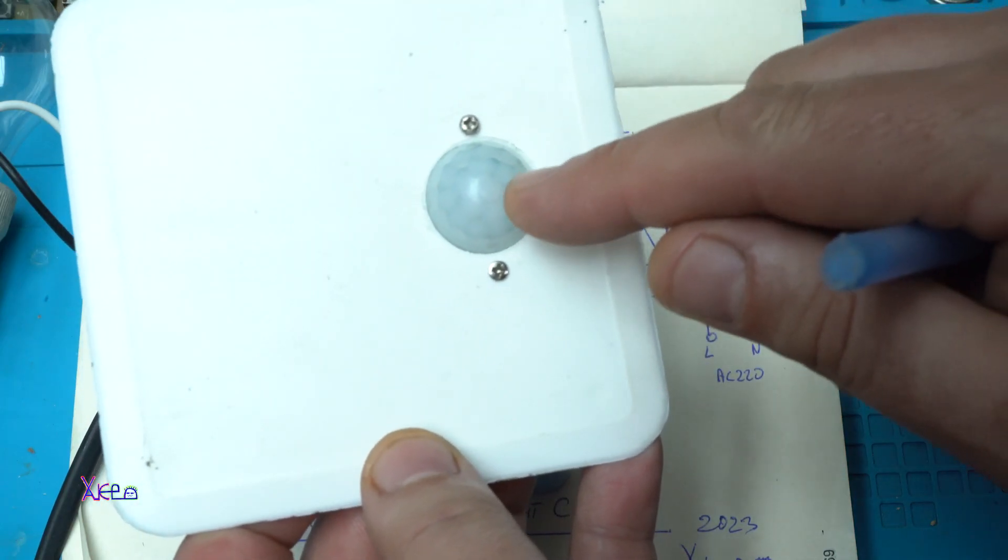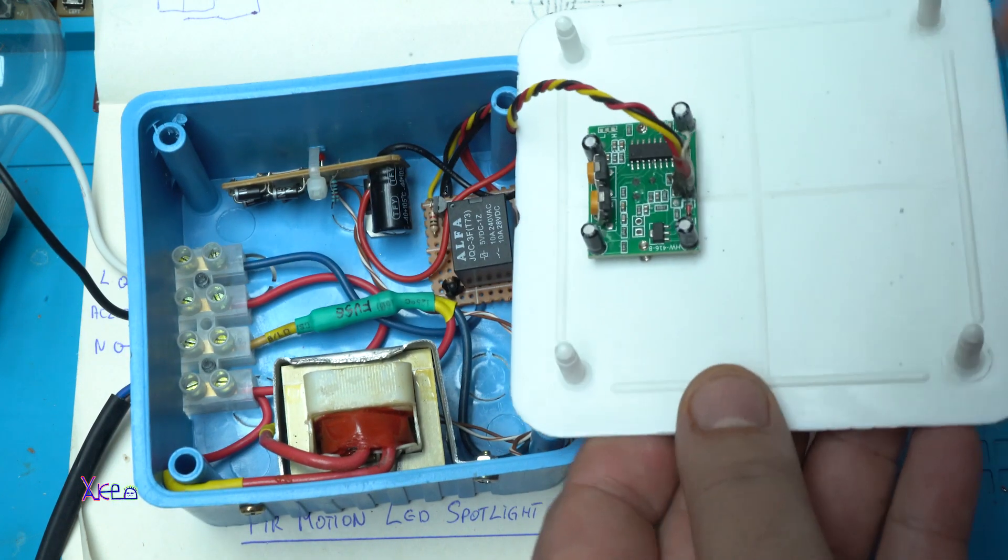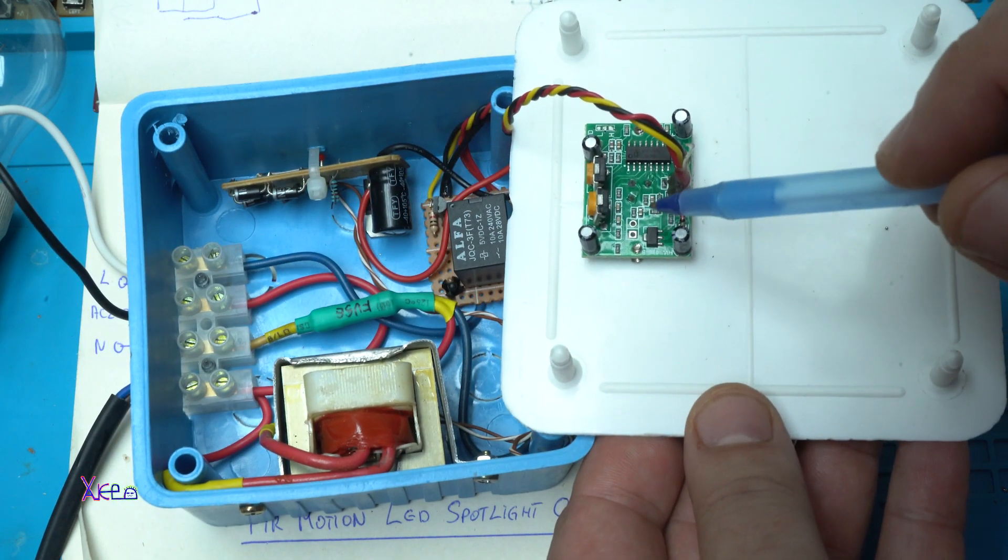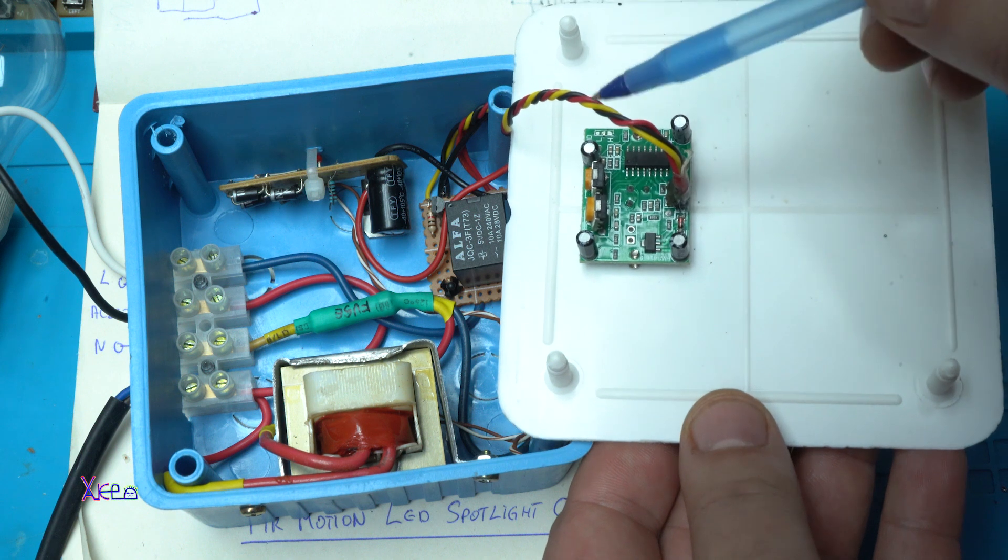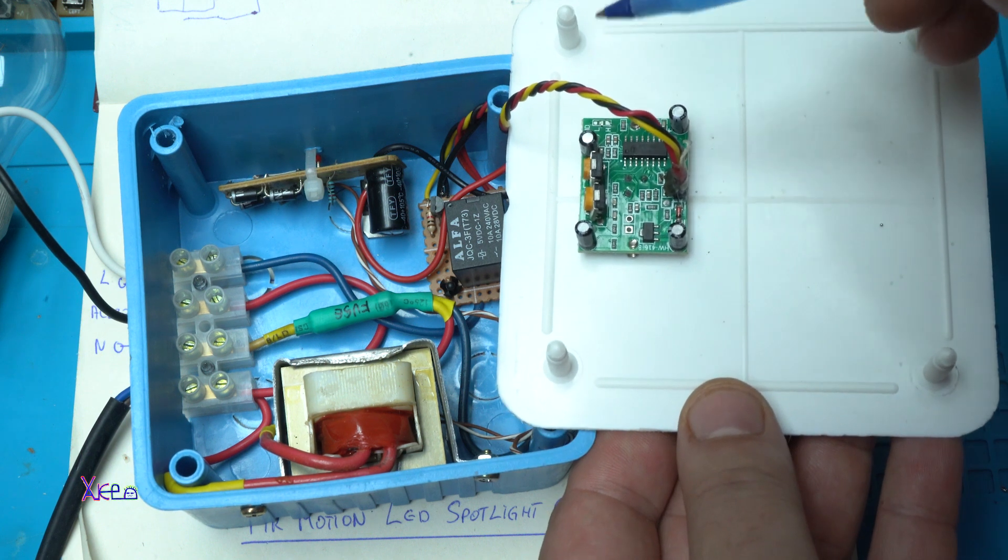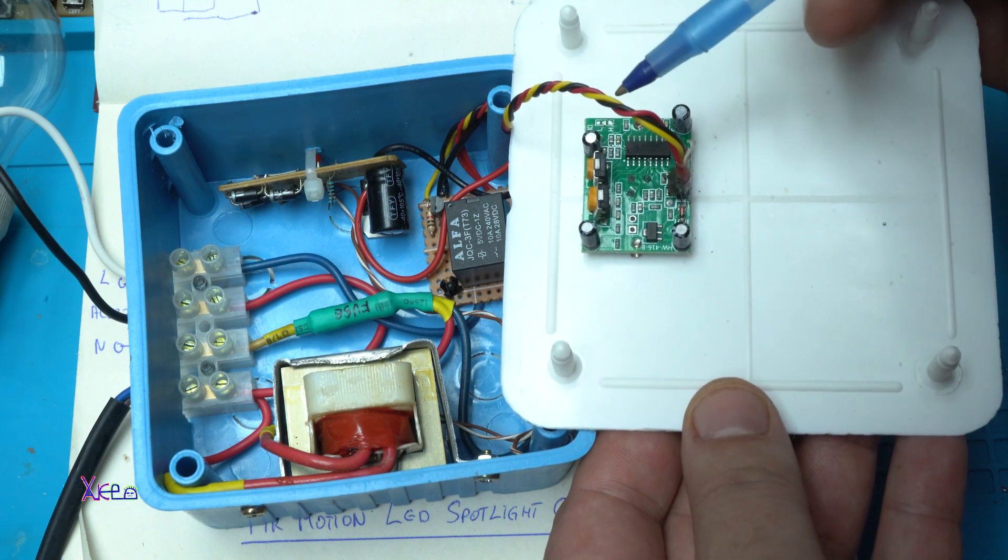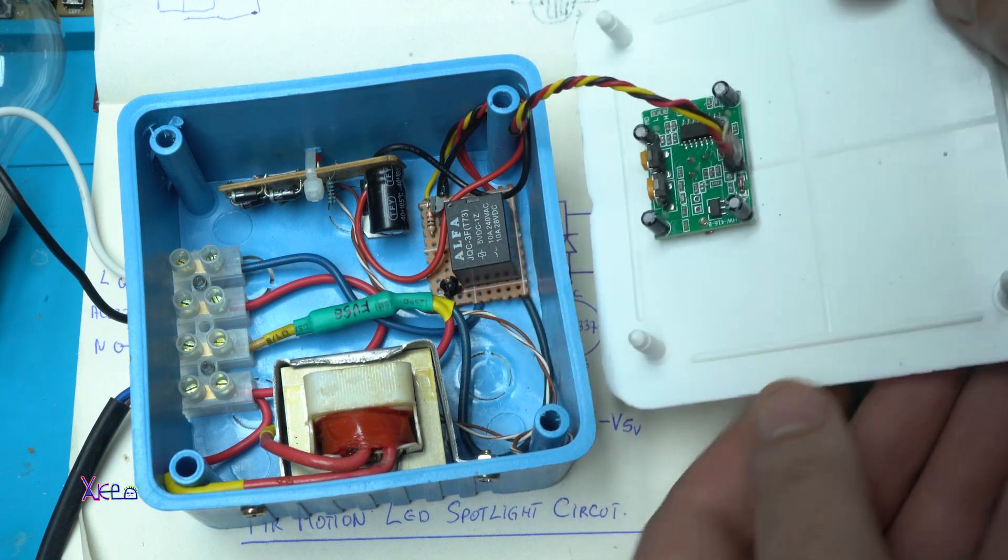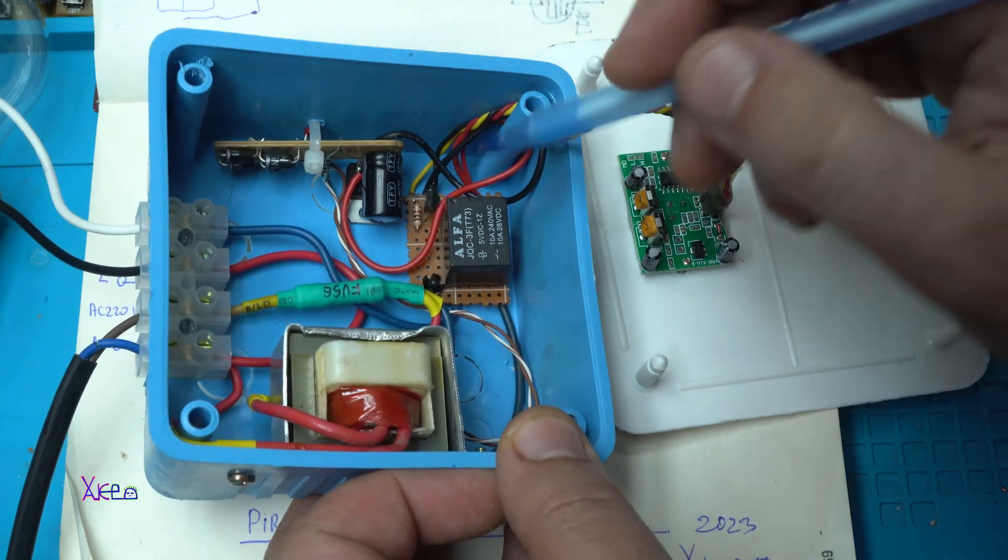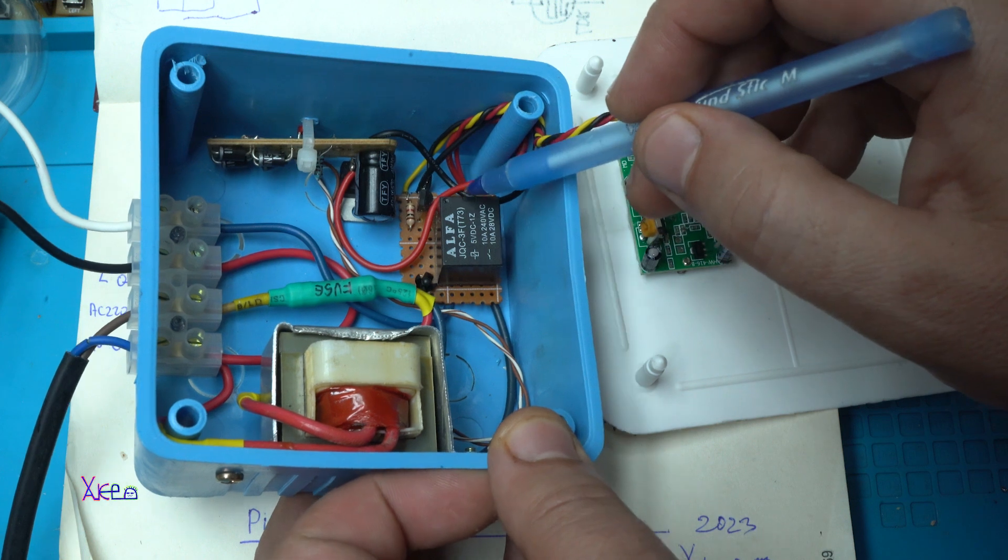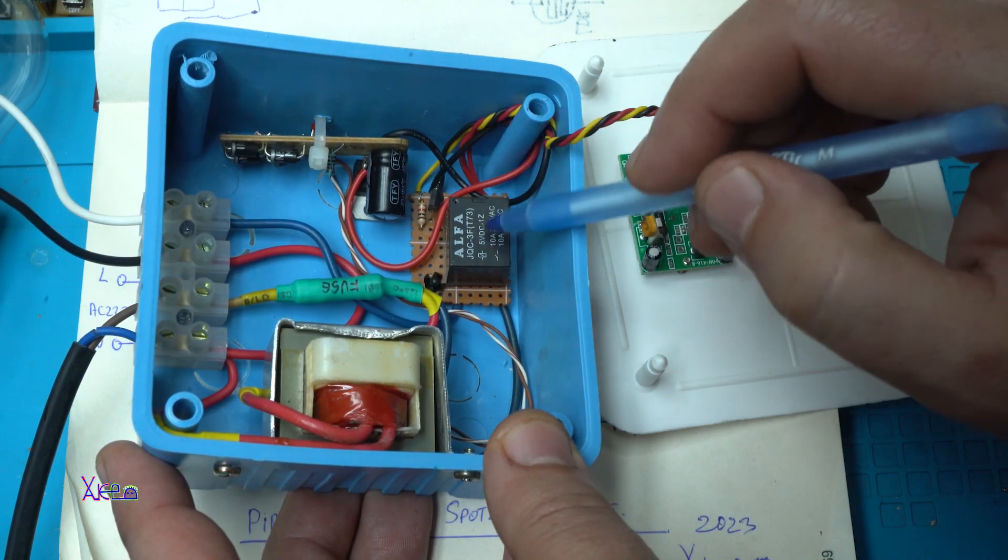I will start with the PIR motion sensor. This motion sensor works on 5V so we need positive and negative 5V, and we have this yellow wire as output that triggers the transistor to activate the relay.